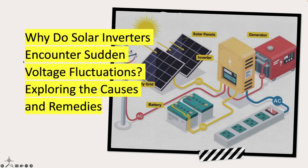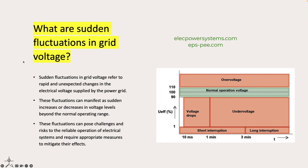Sudden fluctuations in grid voltage refer to rapid and unexpected changes in the electrical voltage supplied by the power grid. These fluctuations can manifest as sudden increases or decreases in voltage levels beyond the normal operating range. Instead of a smooth and consistent voltage supply, the grid experiences abrupt and irregular changes that can impact the performance and stability of electrical devices connected to it, such as inverters and other equipment. These fluctuations can pose challenges and risks to the reliable operation of electrical systems and require appropriate measures to mitigate their effects.